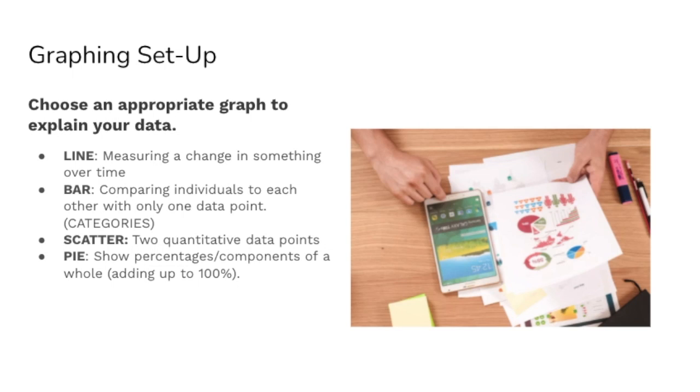When you're trying to choose the appropriate graph to represent your data, remember that a line graph is generally going to measure something that's a change over time. So if you see time as one of the things that is going on in the data, you probably want to be thinking line graph. Bar graphs are going to compare individuals with different data points. So be thinking about categories or different trial runs. If it's a scatter plot, we're going to be seeing two different quantitative data points with those points meeting at a certain part on the graph.